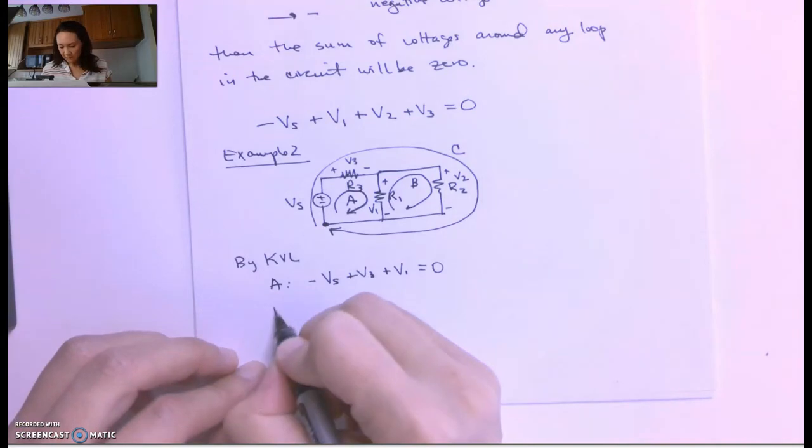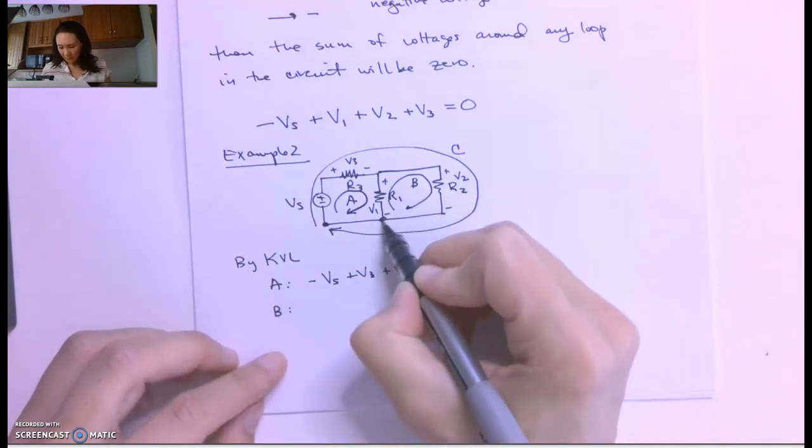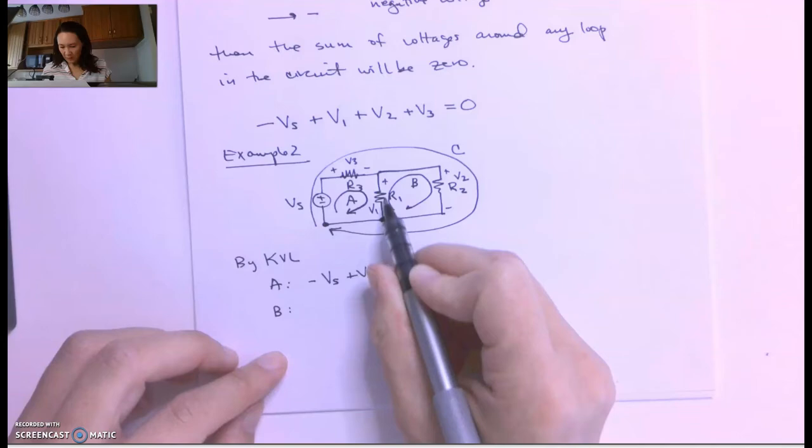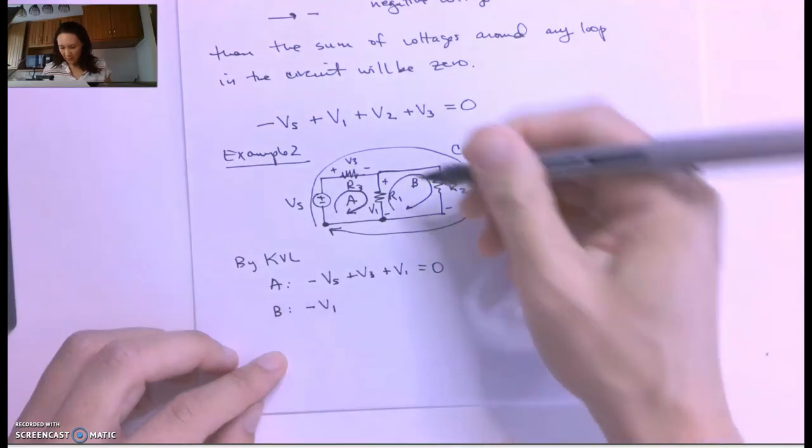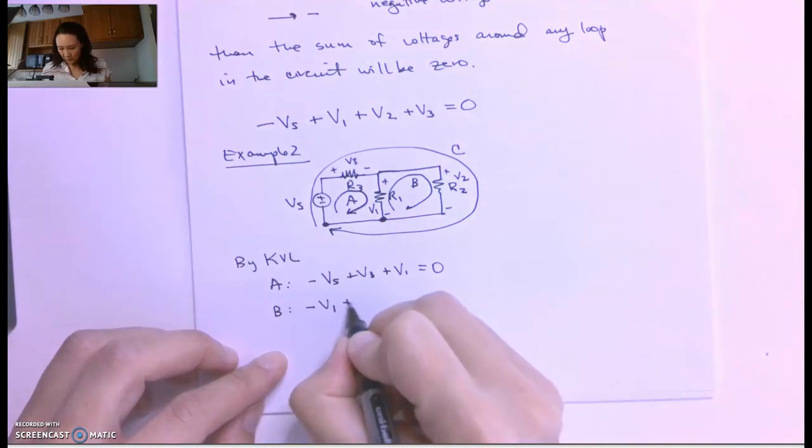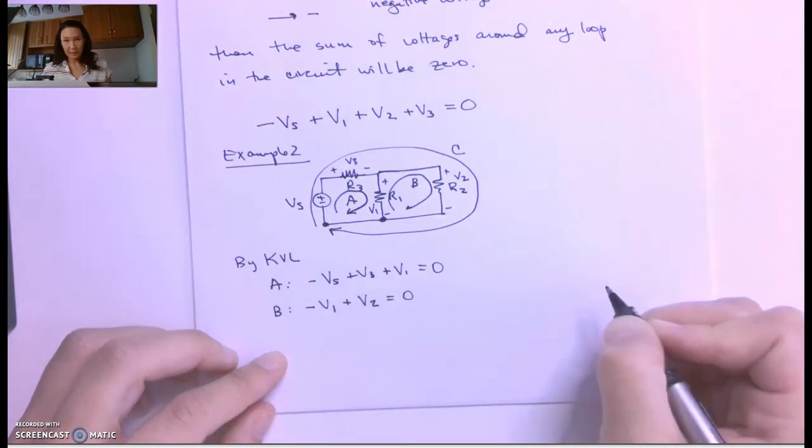Then at loop B, if I start here, I'm going to enter V1 on the negative side. So this will be negative V1. And I'm going to encounter V2 at the positive side. So that's equal to zero.